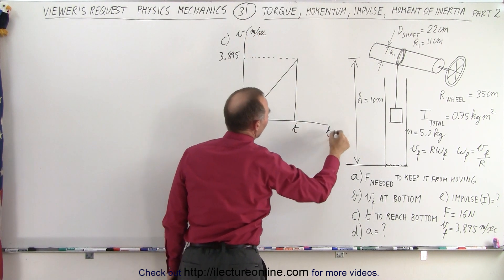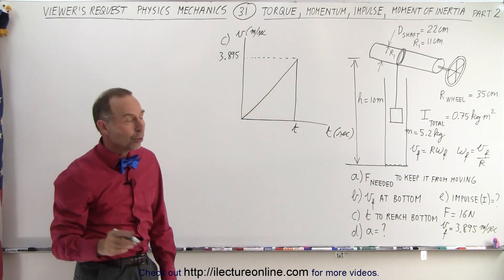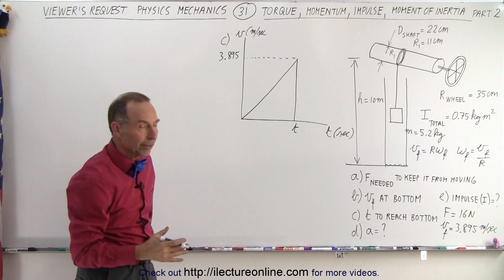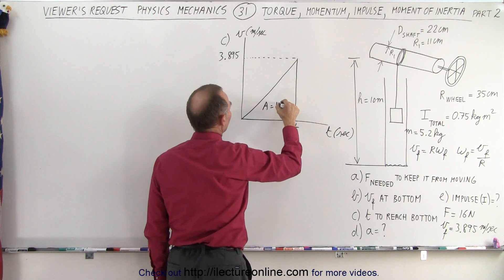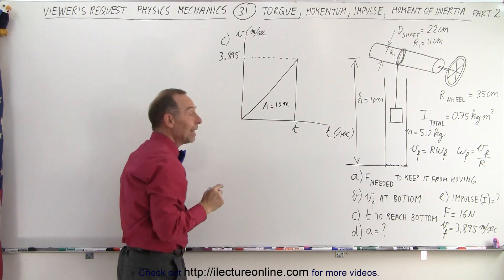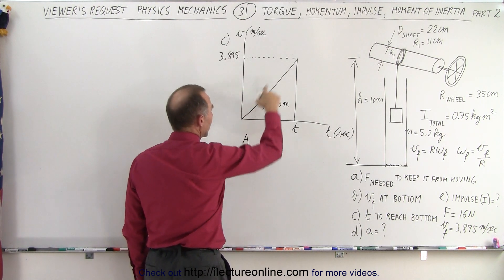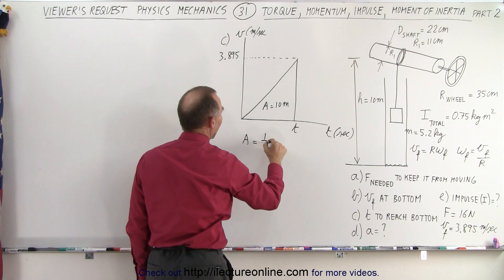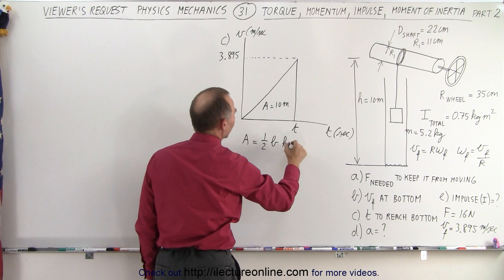And we reach a maximum velocity at this point. So that would be equal to 3.895 meters per second. It takes T amount of time. T is in seconds. We don't know what that is equal to. But we do know that the total distance traveled is equal to 10 meters. So that means that the area is equal to 10 meters.